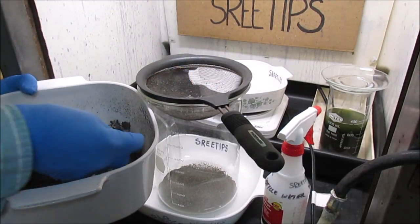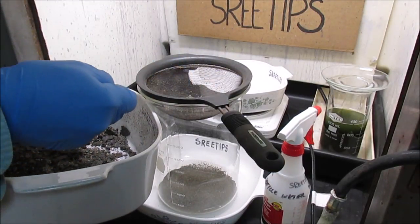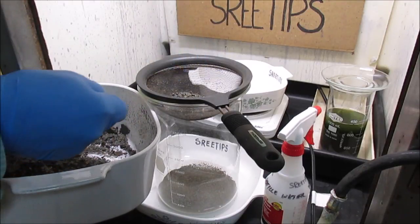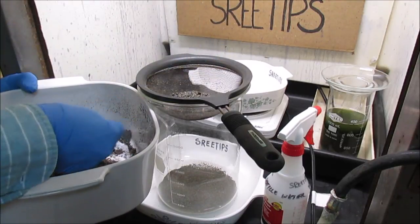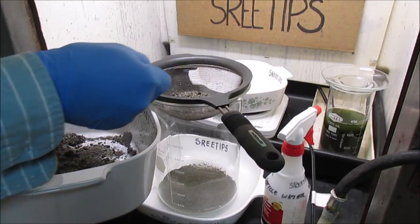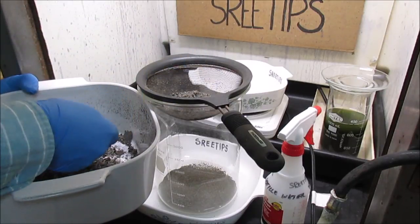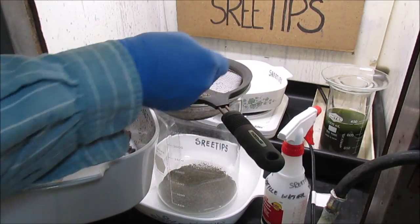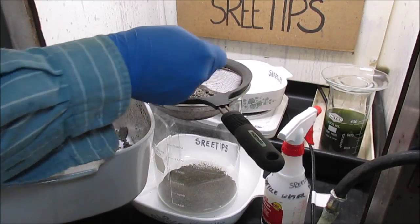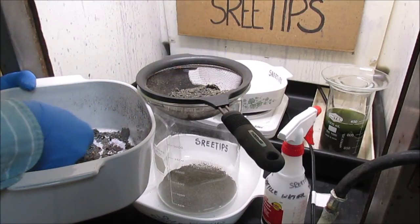But this strainer will strain out any large pieces of chunks of aluminum that may have gotten in with the ash, so it doesn't get down into the beaker. Aluminum will cause problems when we go to try to get this metal out of this ash.